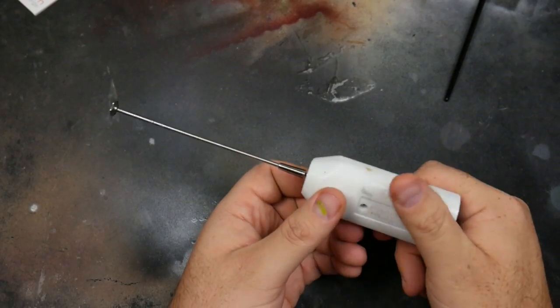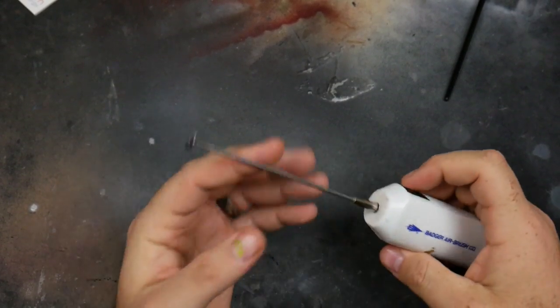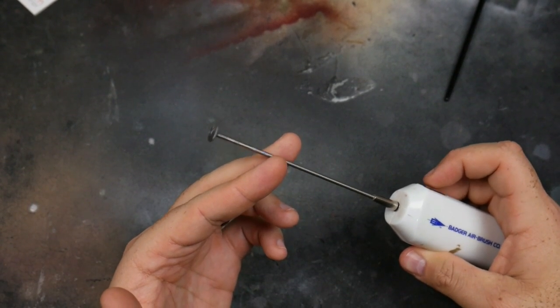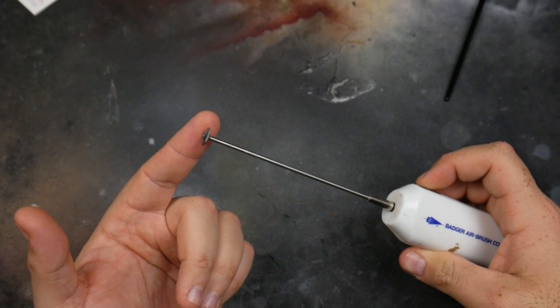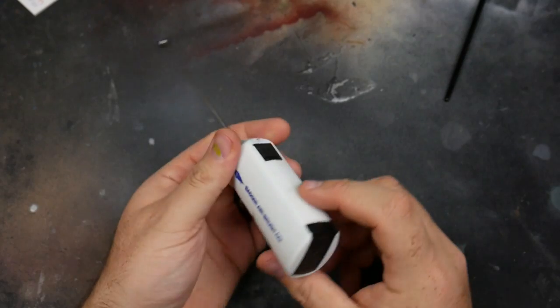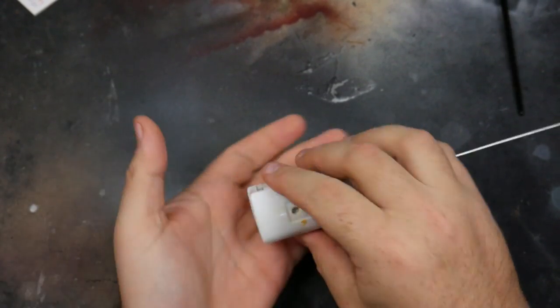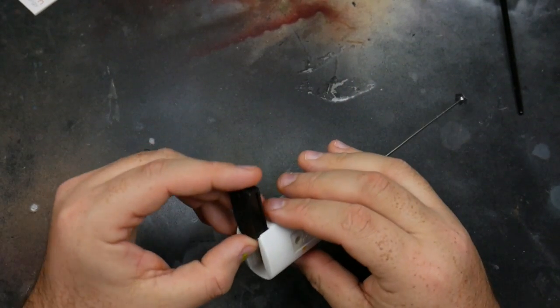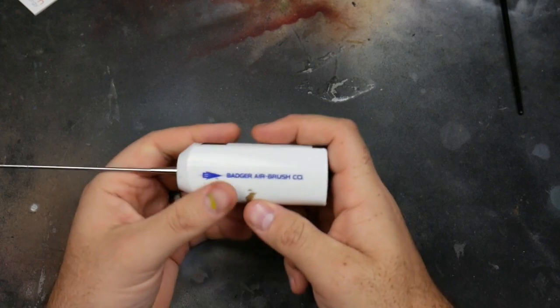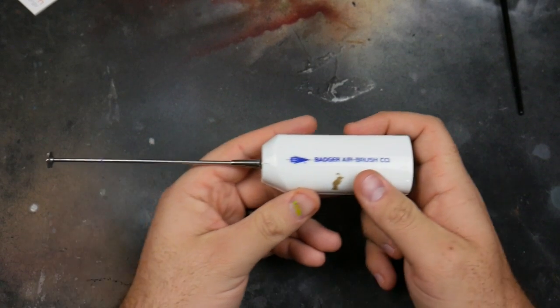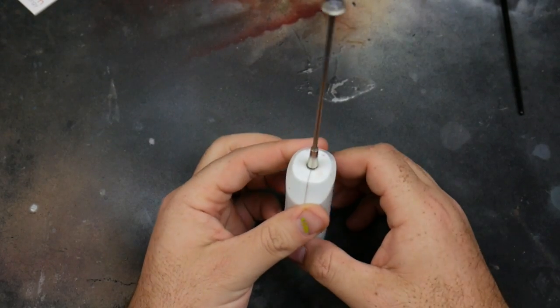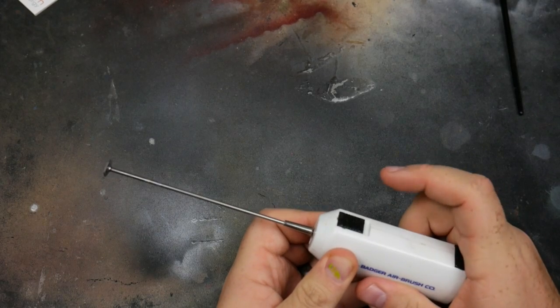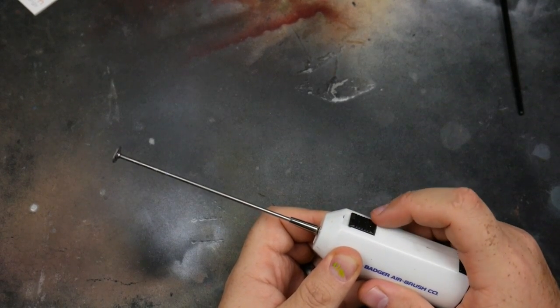The piece that will make this all happen: this is the Badger number 121 paint mixer. They're 16 bucks on Amazon, I've seen them for even cheaper. They've got a little slot back here for two double-A batteries. This thing is epic, it's literally gonna do the job for you. No more scraping and wasting a ton of time.